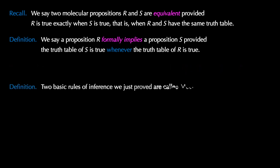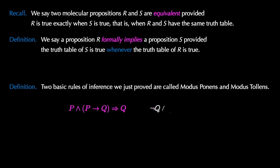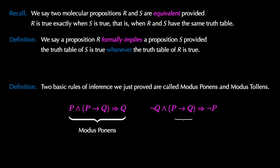The two formal implications we just proved can be called rules of inference. They are called modus ponens and modus tollens. The first — P and P implies Q formally implies Q — is modus ponens. The second — not Q and P implies Q formally implies not P — is called modus tollens.